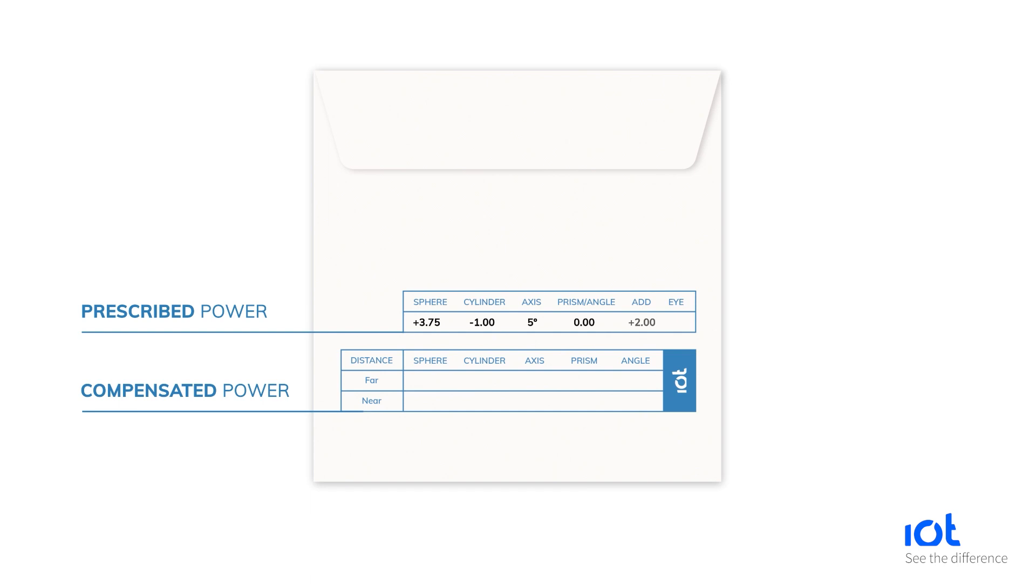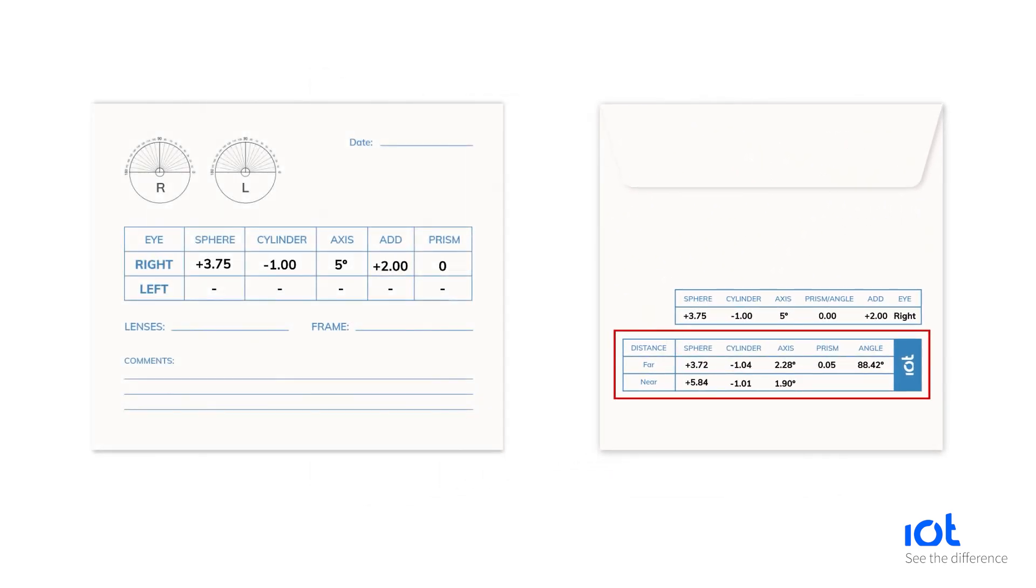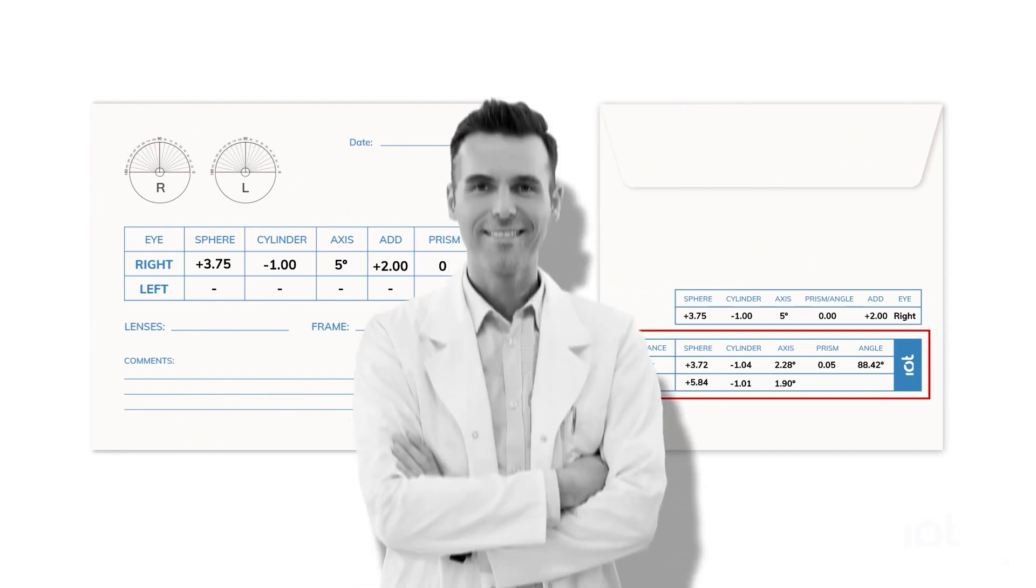This change in power is needed to adjust for deviation when light reaches the lens at angles that are not perpendicular. It ensures sharp vision in real life. Now you understand why power in compensated lenses does not match what you ordered from your laboratory.